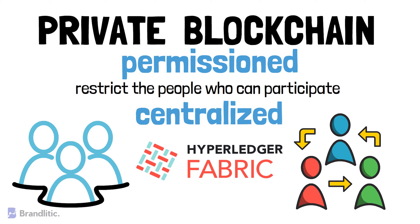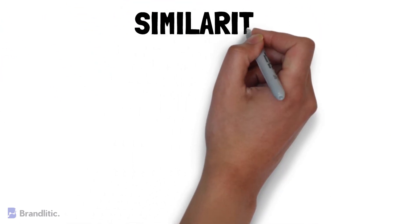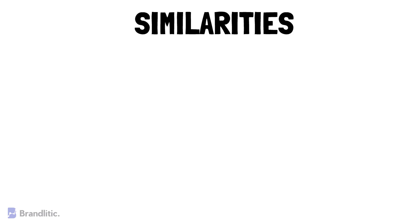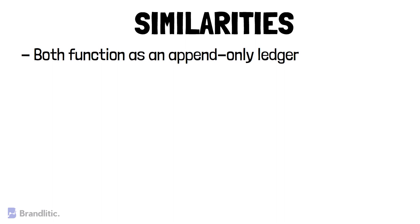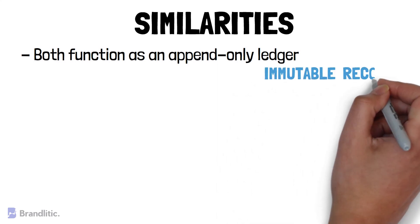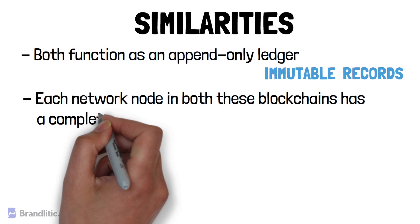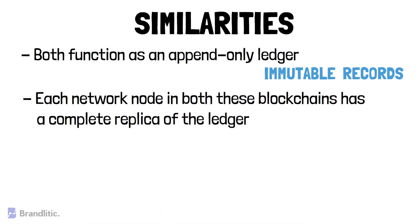Now, as you have got a little overview of the subject, let's pin down the similarities of public and private blockchains. First, both function as an append-only ledger, where records can be added but cannot be altered or deleted — hence these are called immutable records. Second, each network node in both of these blockchains has a complete replica of the ledger, as both are decentralized and distributed over a peer-to-peer network of computers.